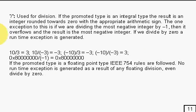For division, you use this slash here, as you might expect. And if the promoted type is an integral type, so it's int or long, the result is the integer rounded towards zero with the appropriate arithmetic sign. What that means is, if you were to write it down and do it on paper, just scrub out everything from the decimal point onwards, and that's the answer you get.